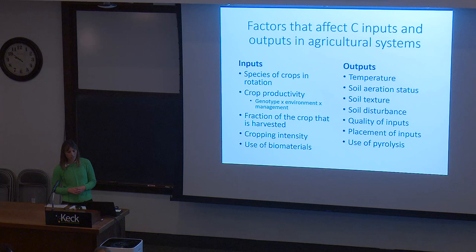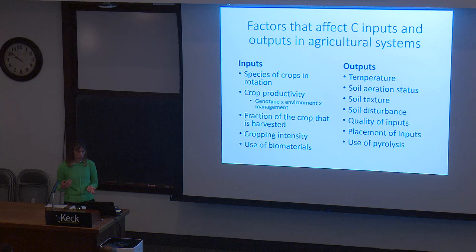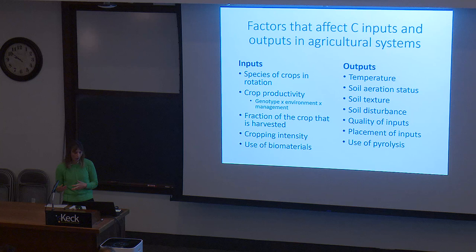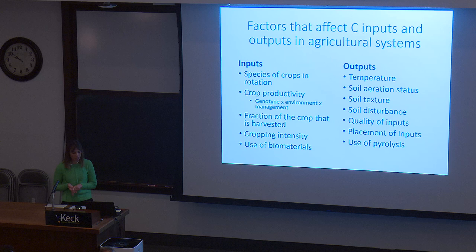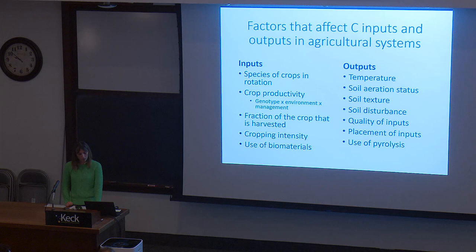Factors that affect carbon inputs and outputs in agricultural systems include the species of crops in the rotation, crop productivity impacted by interactions of genotype, environment, and management, the fraction of the crop that is harvested, the intensity of how many crops are produced per year, and use of biomaterials such as compost. On the output side, factors include temperature, soil aeration status, soil texture, disturbance, quality of inputs, placement of inputs, and the use of pyrolysis — that is, biochar — which we'll cover in more detail.